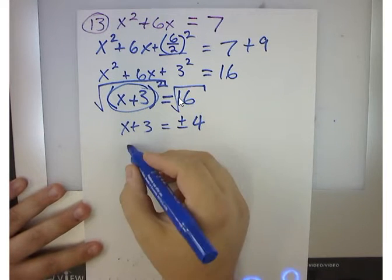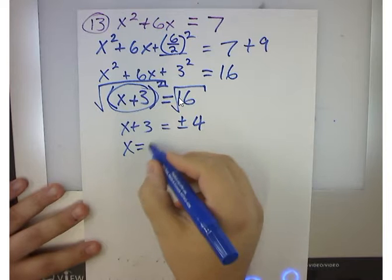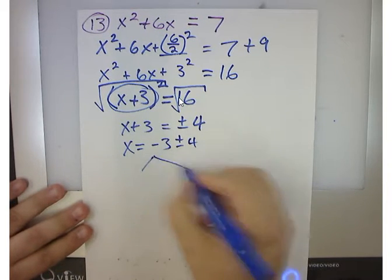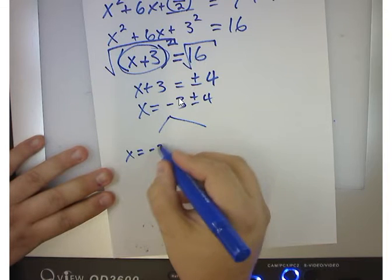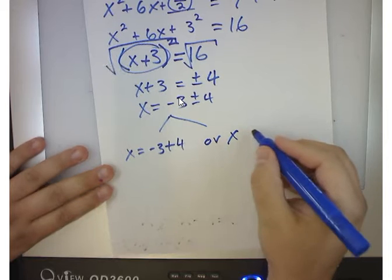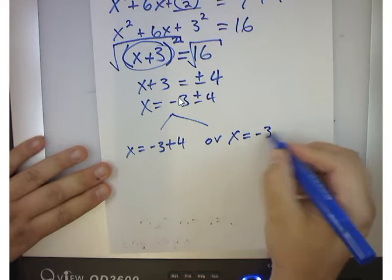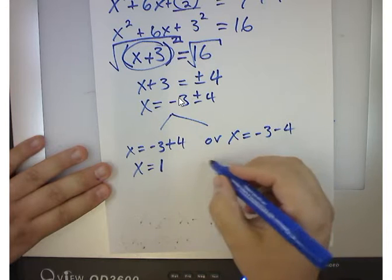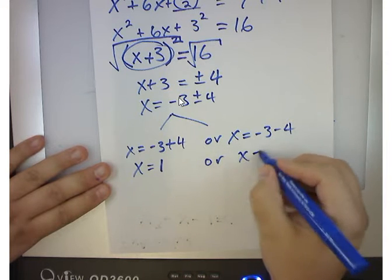So then if I move the 3 to the other side, I get negative 3 plus or minus 4. And we could split that apart. We could say x is equal to negative 3 plus 4, or x is equal to negative 3 minus 4. So x is equal to 1, or x is equal to negative 7.